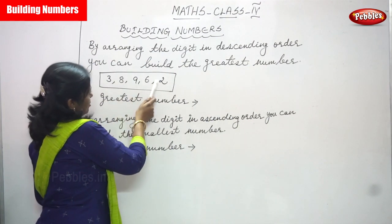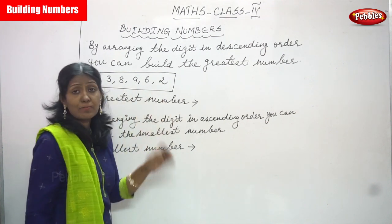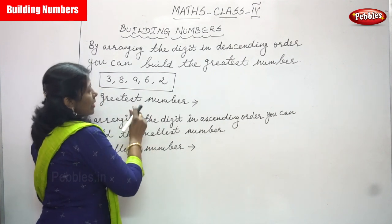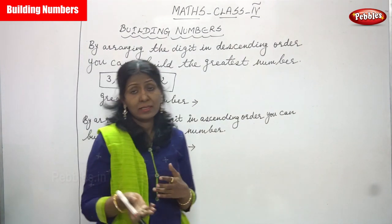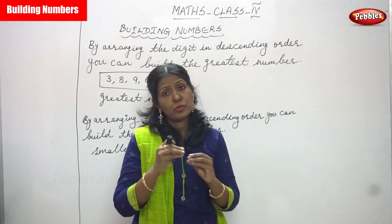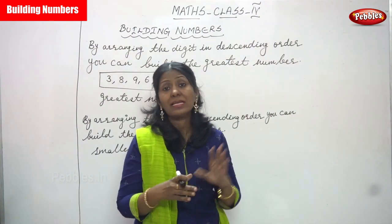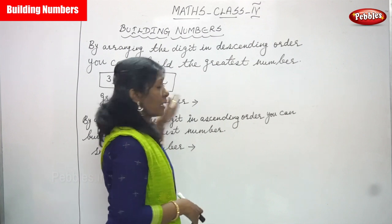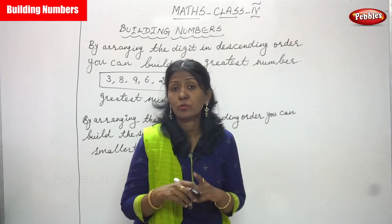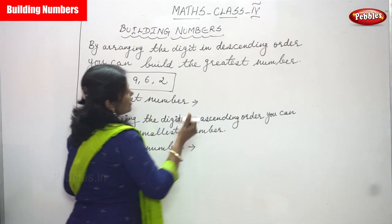Look at this number: three, eight, nine, six, two. How many numbers? One, two, three, four, five — five numbers are given in this box. Now I'm going to write the greatest number. While forming the greatest number, you should not use a comma between the numbers, because this is only the individual numbers. Don't forget this rule. Which is the greatest number? Nine is the greatest number.